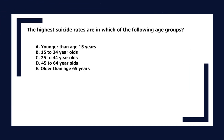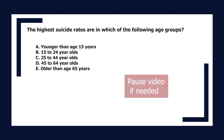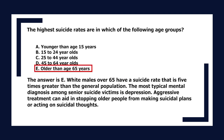The highest suicide rates are in which age group? A. Younger than 15 years, B. 15 to 24 year olds, C. 25 to 44 year olds, D. 45 to 64 year olds, E. Older than 65 years. The answer is E. White males over 65 have a suicide rate five times greater than the general population. The most typical mental diagnosis among senior suicide victims is depression. Aggressive treatment can aid in stopping older people from acting on suicidal thoughts.